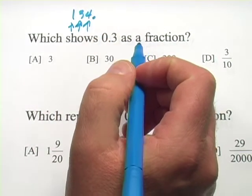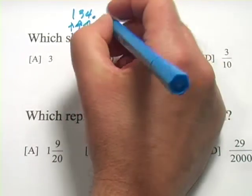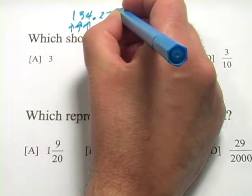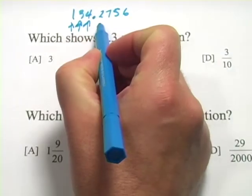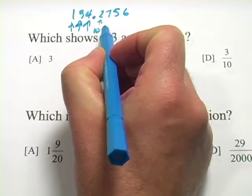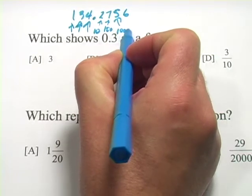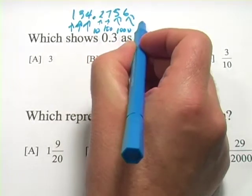Then comes the decimal point, and we go the other direction. This place right here, let's say this is 134.2756, this would be the 10's place. This would be the 100's place here. Then the 1,000th, and then the 10,000th.